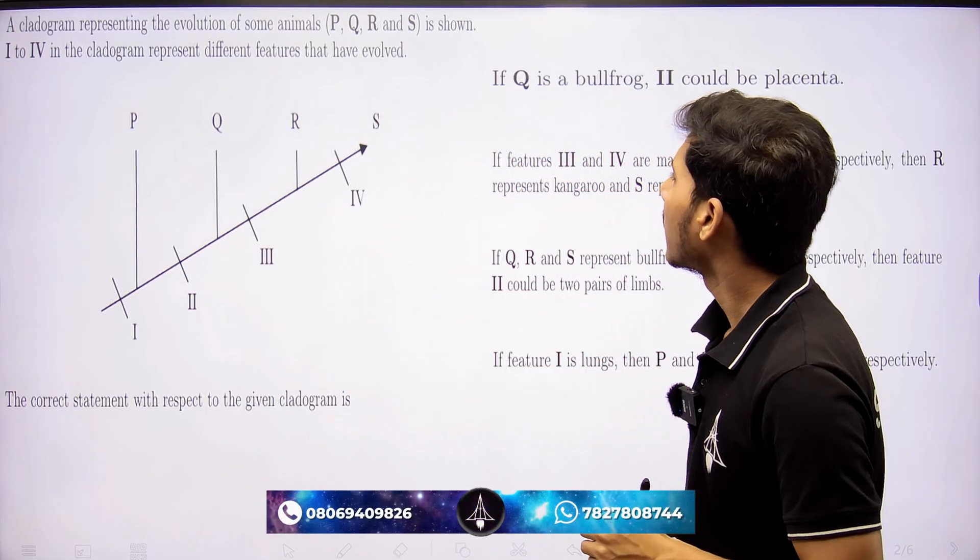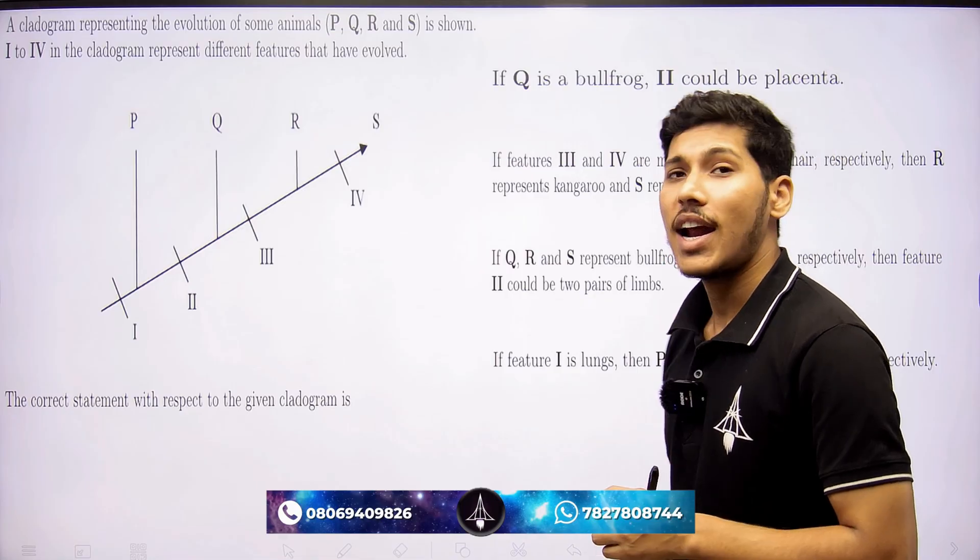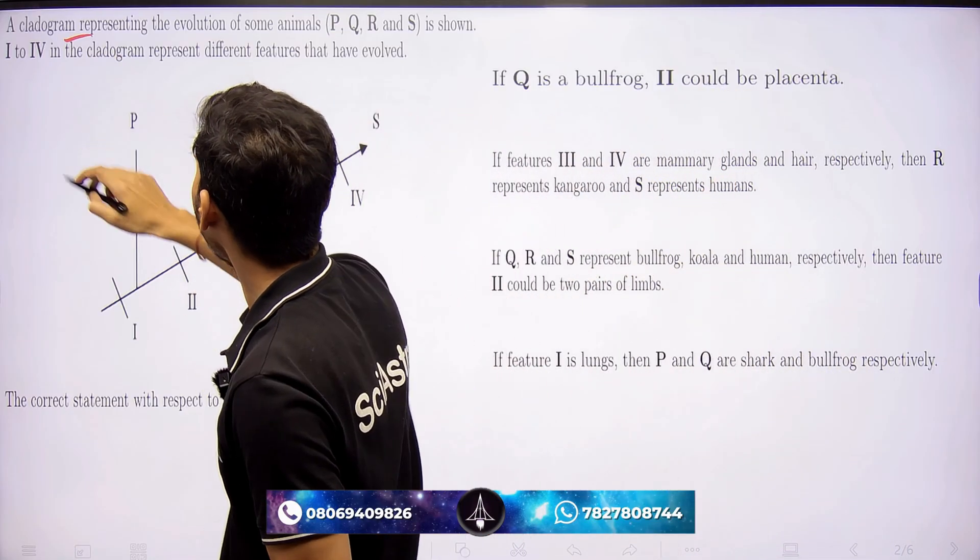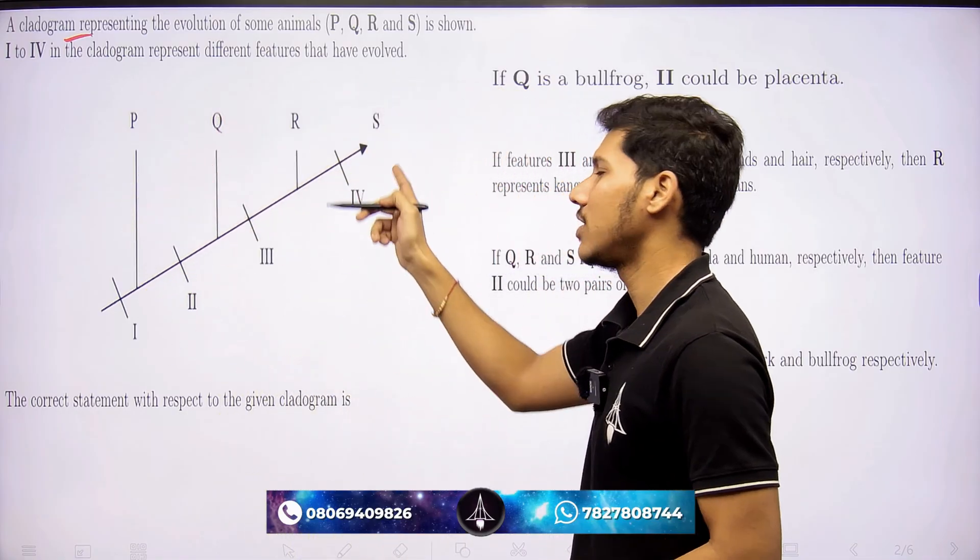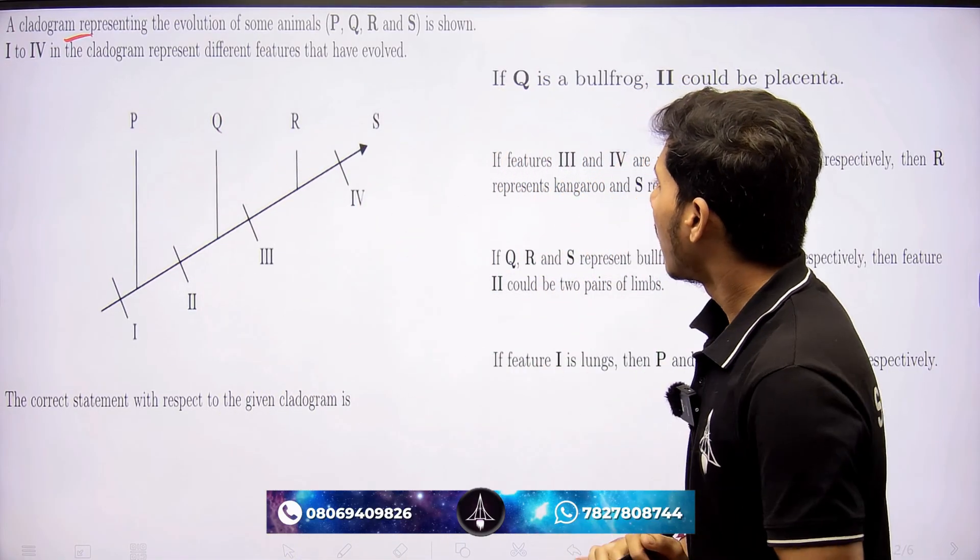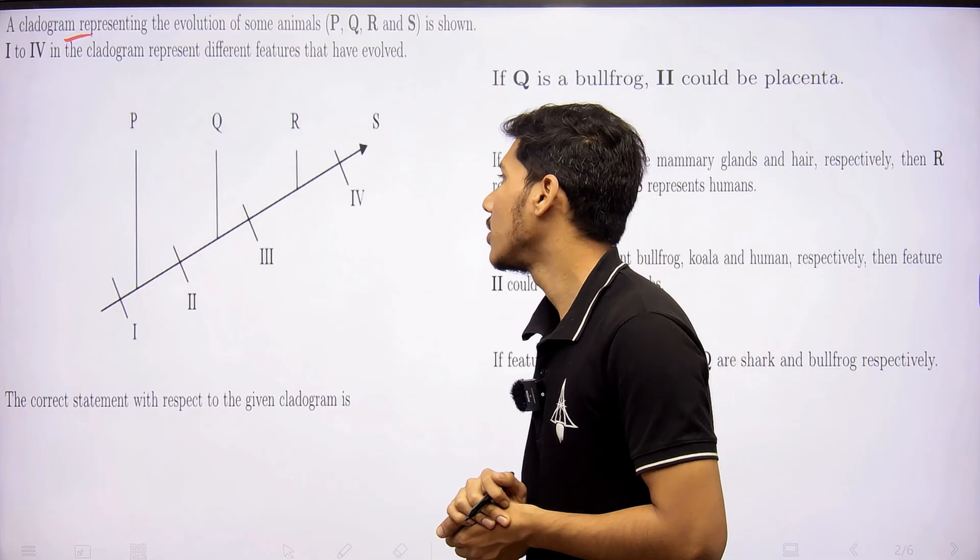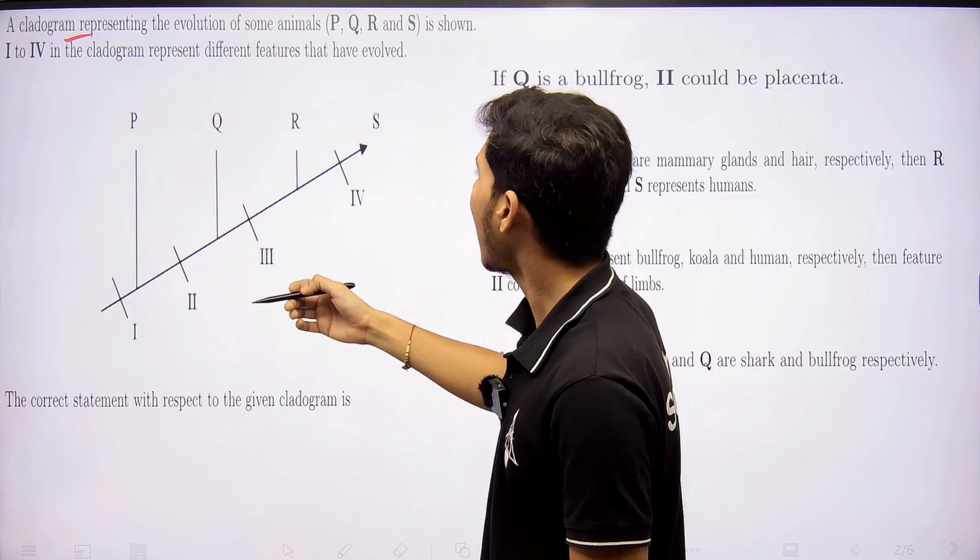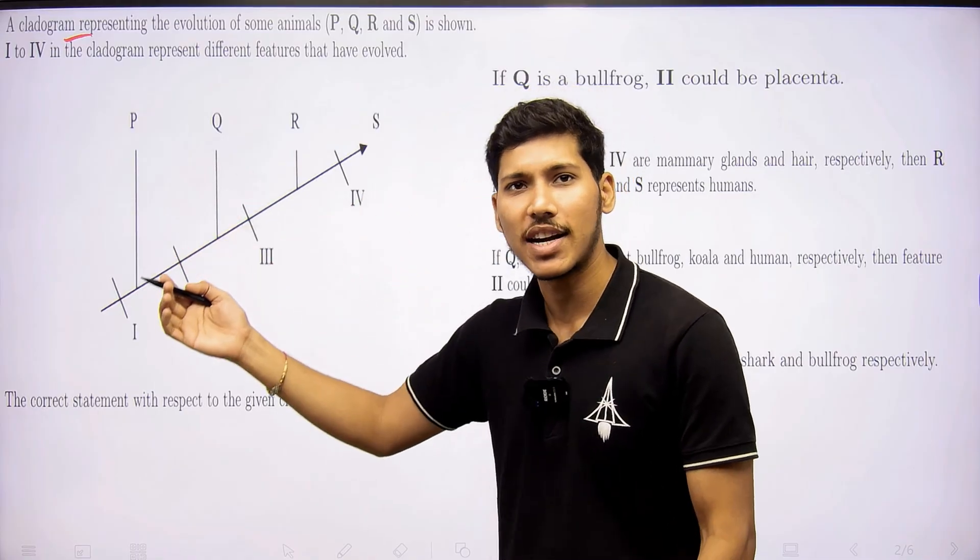This is a question which covers the concept of cladogram and phylogenetics. Here they have given a chart, this chart is known as cladogram which represents the ancestry of various organisms. Here they have shown the ancestry of vertebrates actually.